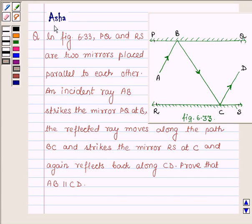Hi and welcome to the session. I am Asha and I am going to help you with the following question which says in figure 6.33, PQ and RS are two mirrors placed parallel to each other.